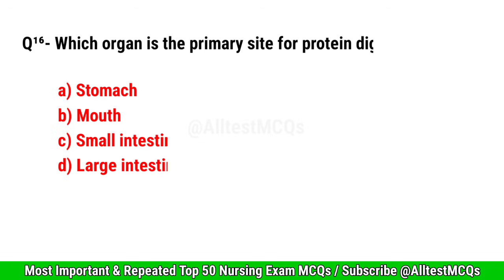Question No. 16. Which organ is the primary site for protein digestion? Correct option is A. Stomach.